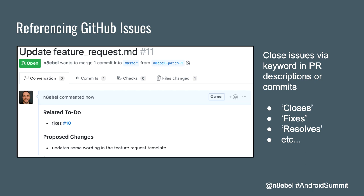One last tip: if you're using GitHub issues, you can automatically close issues by referencing them from a commit or pull request using special keywords. For example, typing 'Fixes #10' in a pull request description will automatically close issue number 10 when the pull request is merged. This syntax works with keywords like 'closes,' 'fixes,' 'resolves,' and several others. It's a nice way to simplify the management of your issues when working with pull requests.